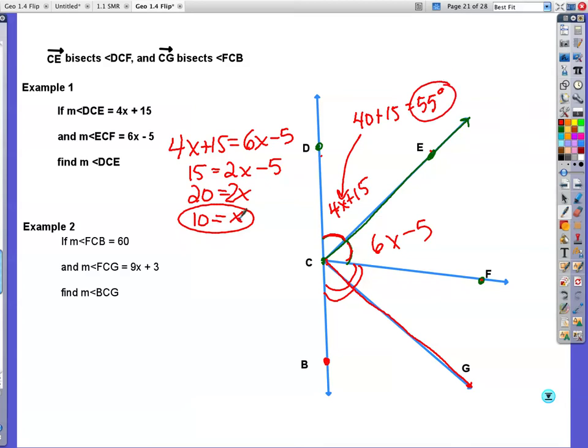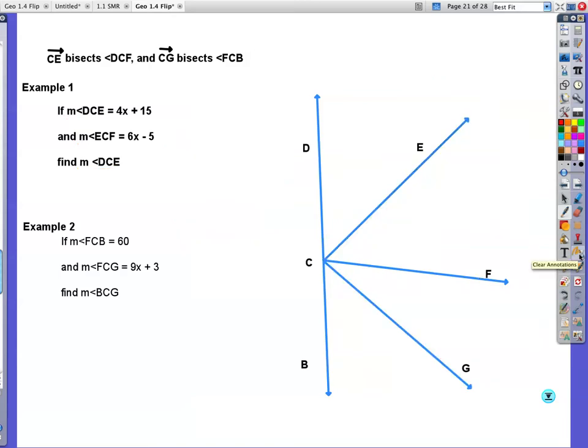Because the question is not what is X. The question is find the measure of DCE. That's what the M means, by the way. When you see an M in front of the angle, the measure. Now here's how you check your work. I do a quick check like this. If I put 10 in here, 10 times 6 is 60. 60 minus 5 is also 55. They have to be the same. They are congruent. I'm going to let you press pause because I'm going to clear this screen to do example 2.